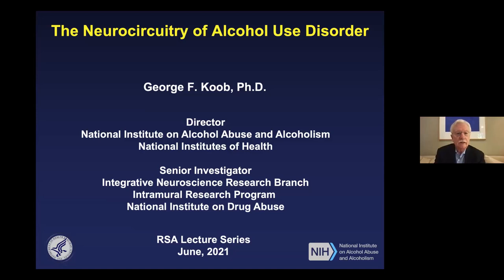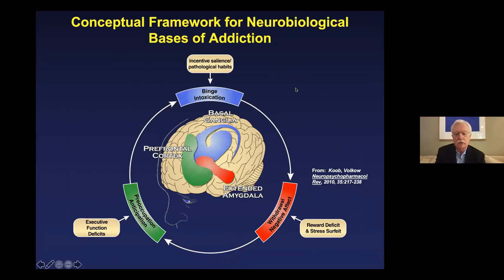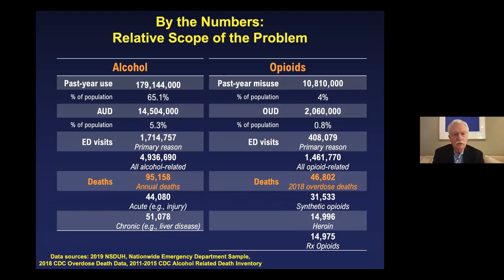Before we get into the science of the neurocircuitry of alcohol use disorder, I just want to mention the scope of the problem. We have an opioid crisis — about 2 million individuals in the United States suffering from opioid use disorder, with a very large number overdosing. But we also have an endemic alcohol problem, with approximately 14 million individuals with an alcohol use disorder. The problems go from emergency department visits to deaths, and perhaps most salient: 50 percent of liver disease is now caused by alcohol in the United States.